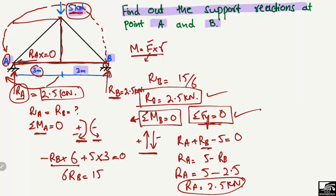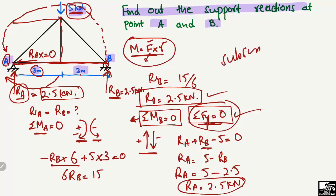This is the general principle for finding support reactions for such truss structures. You can use these equilibrium equations — the moment equation and the vertical force equation — to find support reactions for any kind of truss structure. Hope you guys understand. Don't forget to subscribe for daily civil engineering videos. Thank you for watching.